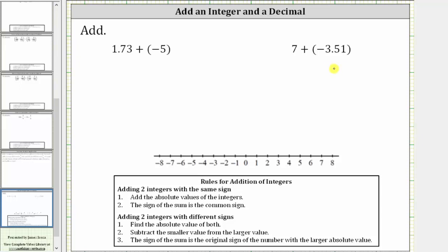We want to determine both sums. For the first sum, we have 1.73 plus negative five. Notice the negative five is going to outweigh the 1.73, and therefore this sum is going to be negative.